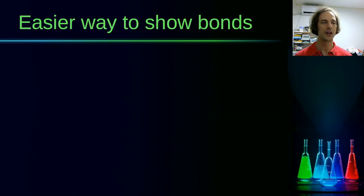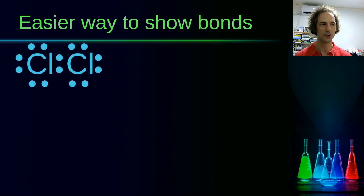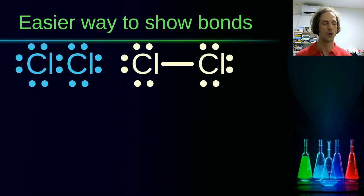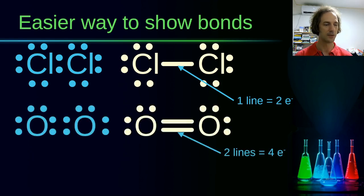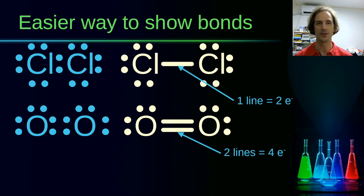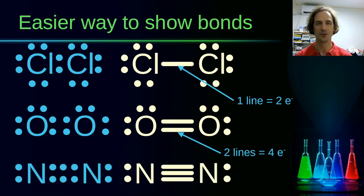That was a complicated way to draw these molecules, so we can use an easier notation. For the chlorine molecule, instead of drawing two dots between the two chlorine atoms, we draw one single line, symbolizing a single bond made up of two electrons. For oxygen, with four shared electrons, we draw two lines representing a double bond. For nitrogen, we draw three lines for the six shared electrons, giving a triple bond.